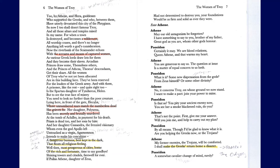'But to see the true face of misery you need to look no further than the poor creature lying here in front of the gate — Hecuba,' who of course is the queen of Troy, 'whose unnumbered tears match the numberless dead. She grieves for her daughter Polyxena, who has been secretly and brutally murdered at the tomb of Achilles.' Look at the language being used here — and at the tomb of Achilles, we again get this reference to the disrespect shown towards the gods.